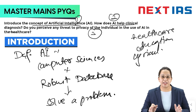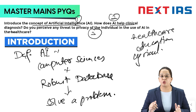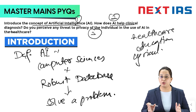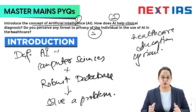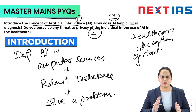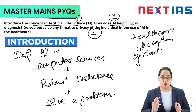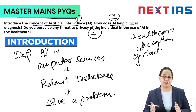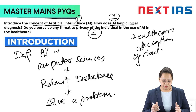I'll explain with a simple example: YouTube viewing. You watch videos on YouTube, and based on your viewership history, YouTube suggests newer videos along the same lines of what you've watched. This is an application of Artificial Intelligence in your daily life.